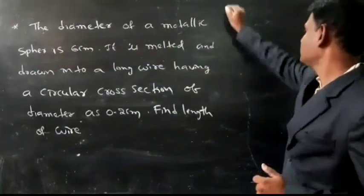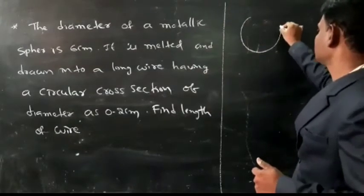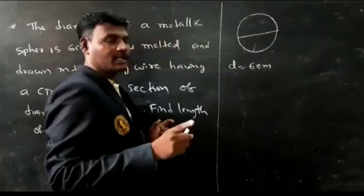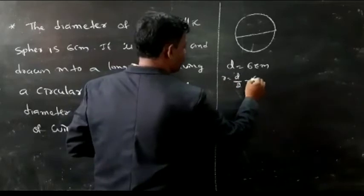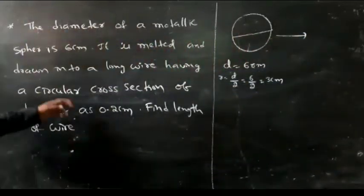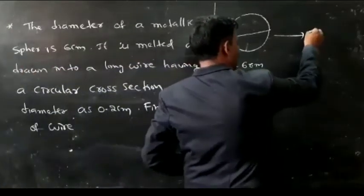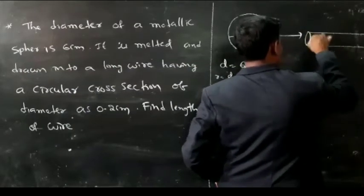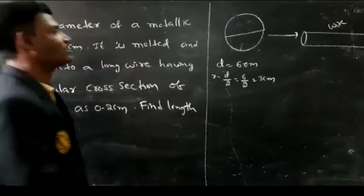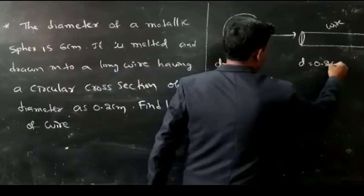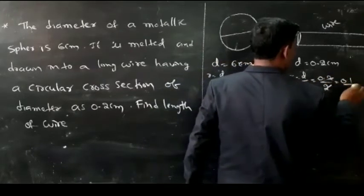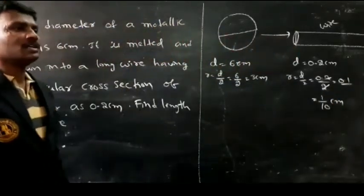The next question: the diameter of a metallic sphere is 6 centimeters, so radius R equals 3 centimeters. The sphere is melted and drawn into a long wire having a circular cross section of diameter 0.2 centimeters. The radius of the wire equals 0.2 by 2, which is 1 by 10 centimeters. We need to find the length of the wire, so let H equal k centimeters.